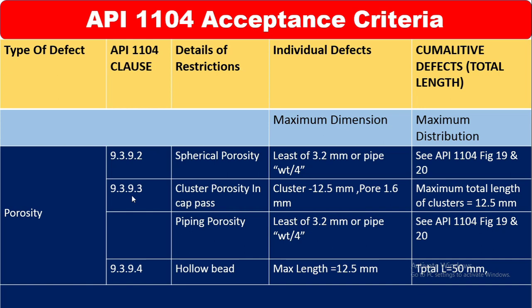Clause 9.3.9.3 is for cluster porosity in cap pass. If you see porosity clustering in the capping pass, the acceptance criteria for individual defect is cluster size 12.5 mm and individual pore 1.6 mm. For cumulative defects, the maximum total length of clusters is 12.5 mm.